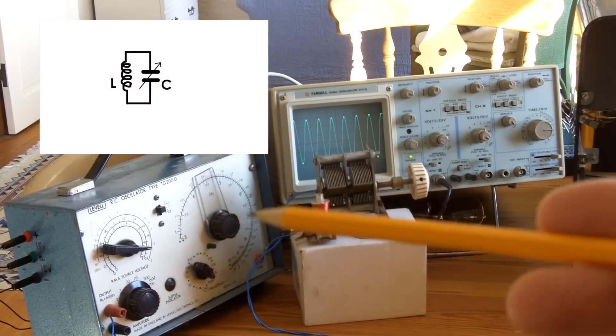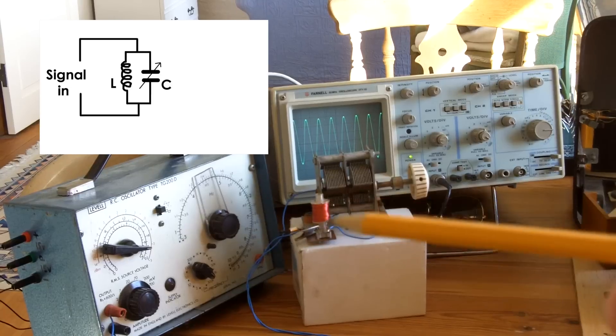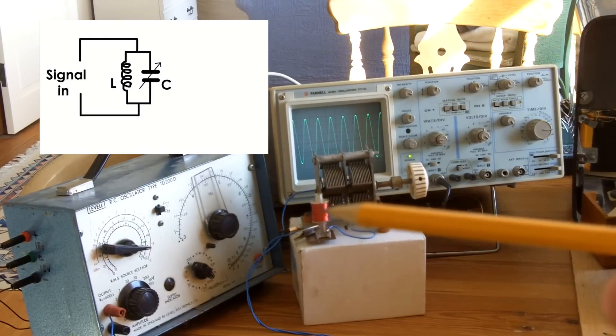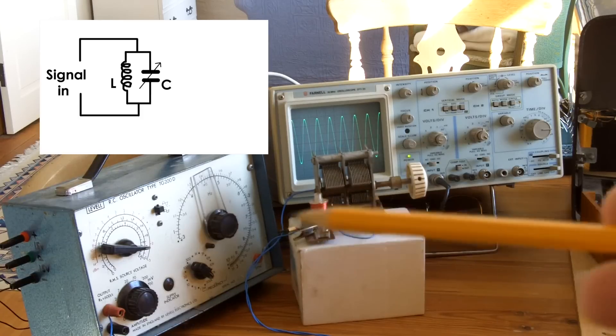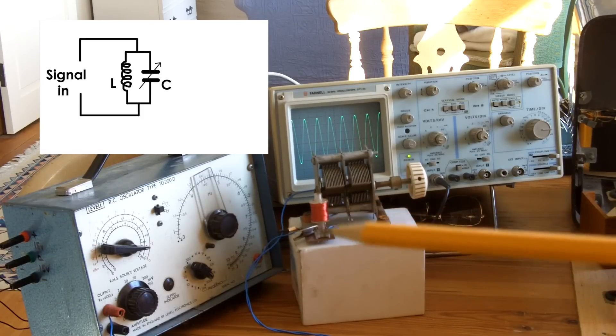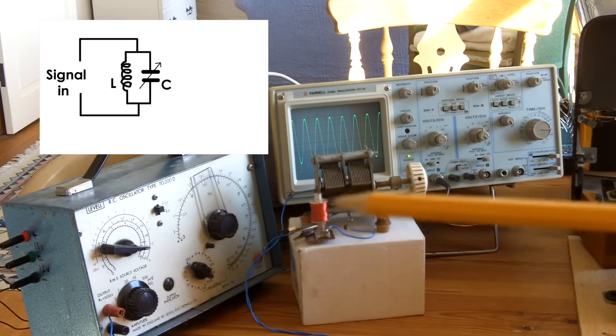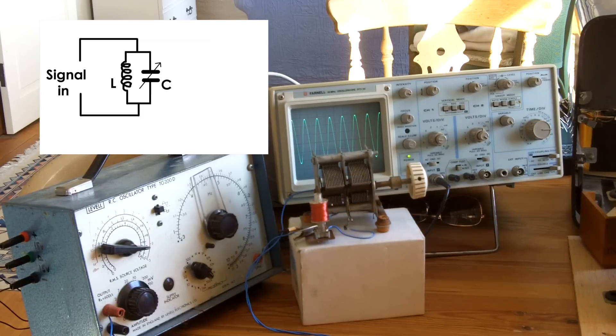I have the signal generator connected across the capacitor and the coil. So all three items are connected in parallel and then looking across that coil and capacitor arrangement I've got the oscilloscope.